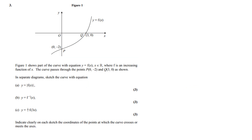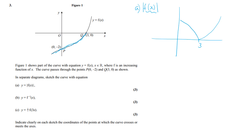Here's another transformations of graphs question. For part a, we sketch |f(x)|: we take the modulus of the function, so the section where y is negative — below the x-axis — gets reflected up. The graph comes down at x = 3, curves around, reflects up, and instead of going through at minus 2 it reflects up and goes through at plus 2.